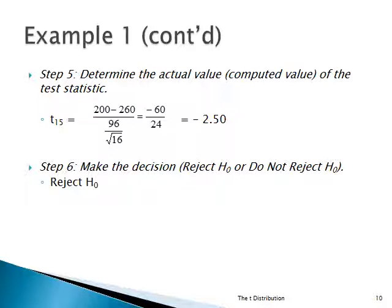Here's the mathematics. T15 equals 200 minus 260 over the standard error of the mean, which is 96 over the square root of 16. The numerator becomes minus 60. The standard error of the mean — the denominator — is 24. We get a value of minus 2.50. So in step 6, we decide to reject H0. The probability is less than 5%.